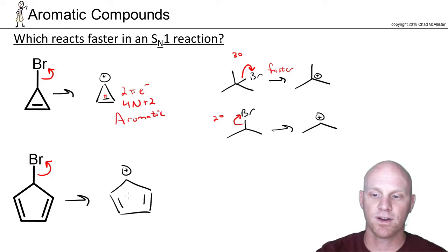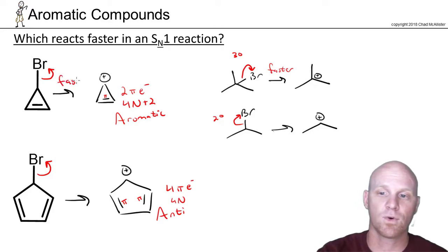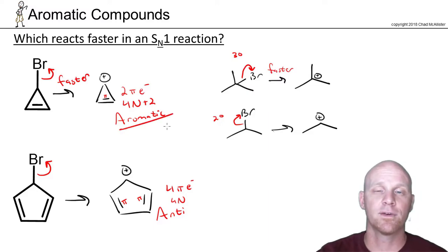In the next one here, again cyclic and conjugated, no sp3s, planar for sure, but now we've got four pi electrons. That's a 4n number, a multiple of four, and that makes this anti-aromatic and not so stable. If one of these is going to be faster, whichever one forms the more stable carbocation, and the aromatic one is by far the more stable carbocation.